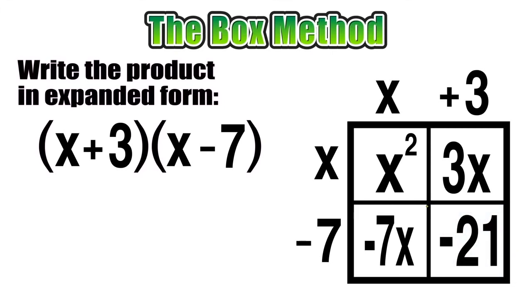So now that the inside sections of our box are complete, we need to add these four terms together to write the product of the original two binomials in expanded form. Now we can write the sum of the four terms starting with x squared.